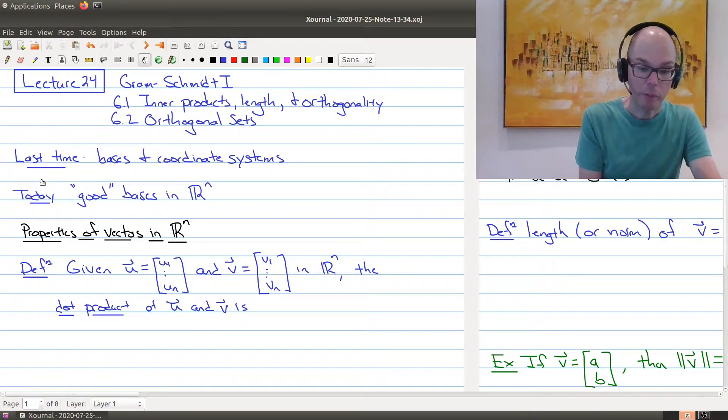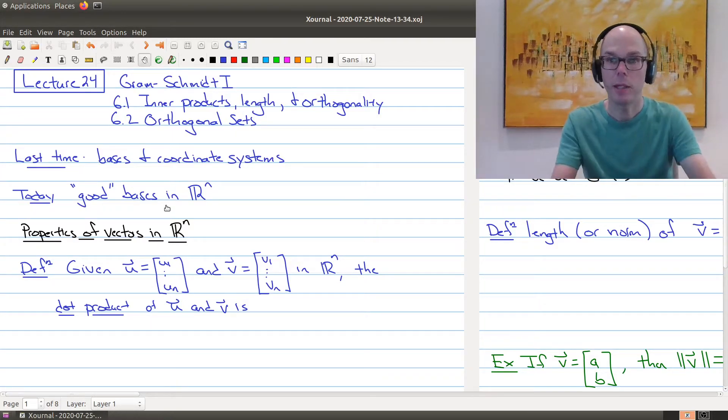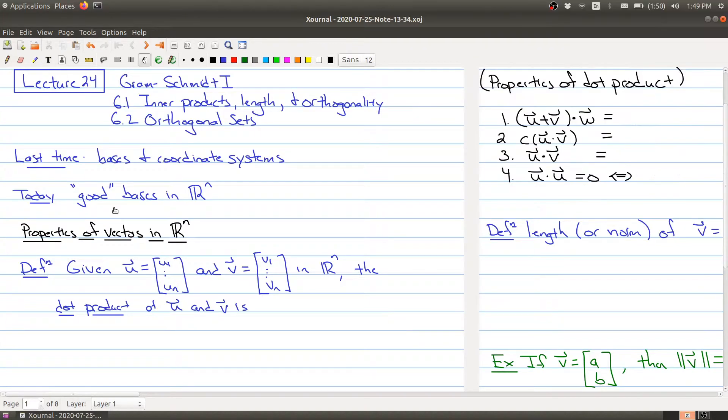Just to recap where we were, last time we talked about bases and coordinate systems, and today what you want to think about is we're going to talk about good bases in R^n. So there are many different bases in R^n, and what we want to do is pick out bases that have nice properties that we can exploit. So in order to talk about what a good basis is, we need to develop a couple more properties about vectors in R^n. Some of you may have seen this before, so it might be a review, but for others it may be new, and I'll quickly explain all the appropriate details.